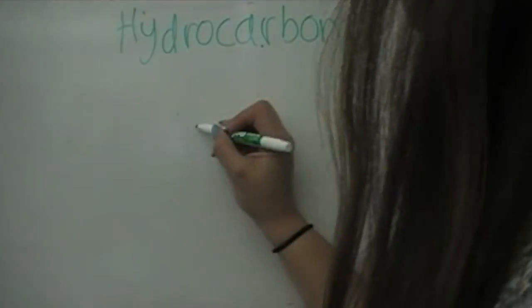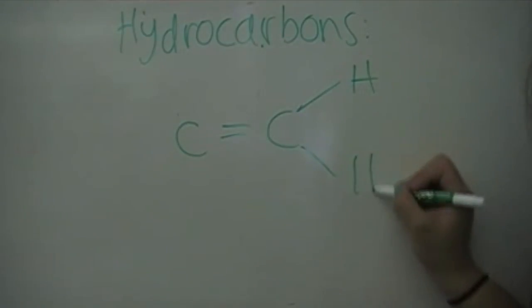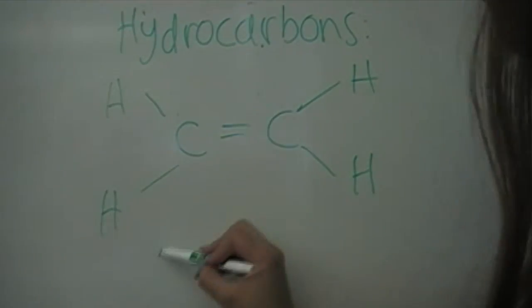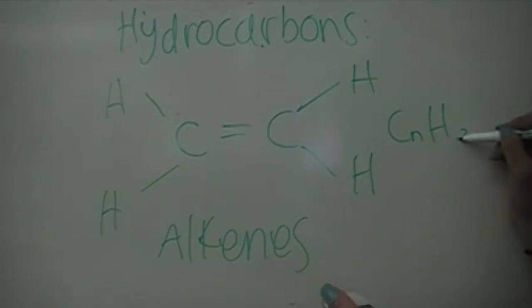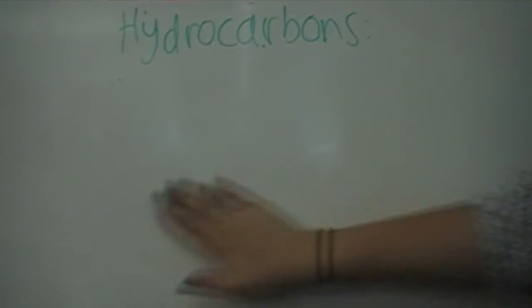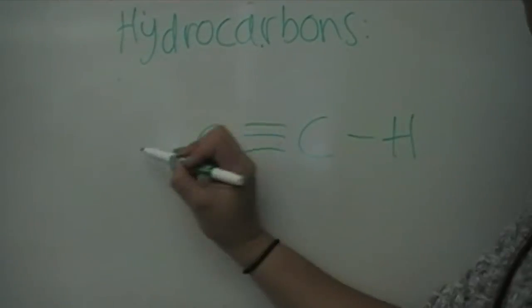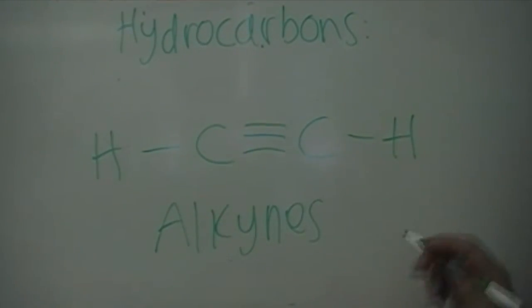Alkenes are unsaturated hydrocarbons that include at least one carbon-carbon double bond. Alkenes have the general formula C subscript N, H subscript 2N. Finally, alkynes are characterized by containing at least one carbon-carbon triple bond. The general formula for alkynes is C subscript N, H subscript 2N minus 2.